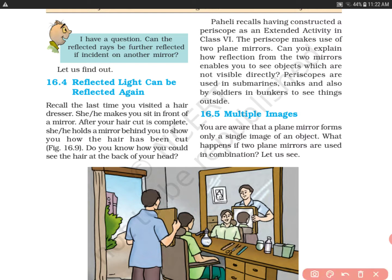Periscopes are used in submarines, tanks, and also by soldiers in bunkers to see things outside. You don't have to look over the wall directly - you can use the periscope. This is the same way the reflected light is reflected again, the phenomenon which you can see in the periscope.